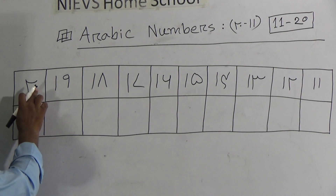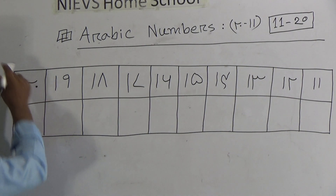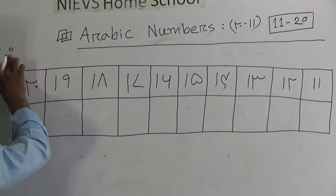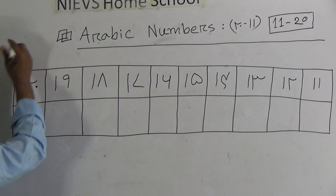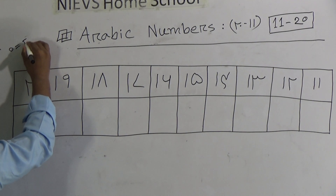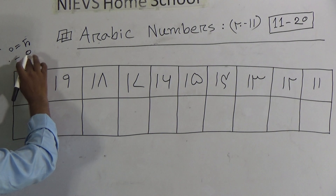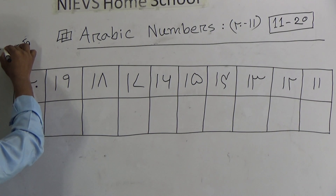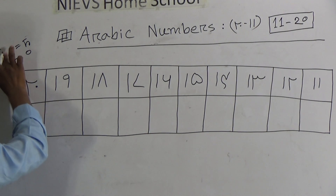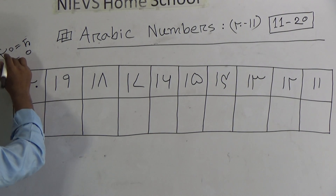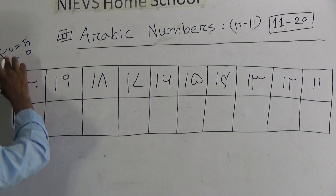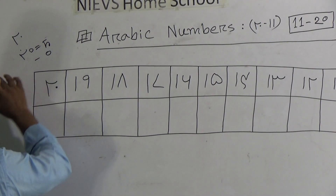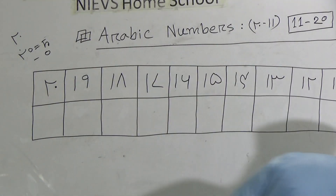Now, an important note: this is zero in Arabic. If you use this symbol as zero it is not zero — it is equal to five in Arabic. The dot is equal to zero. So if you write like this it will be 15, and if you write like that it will be 25. You must use the dot, not the zero symbol.